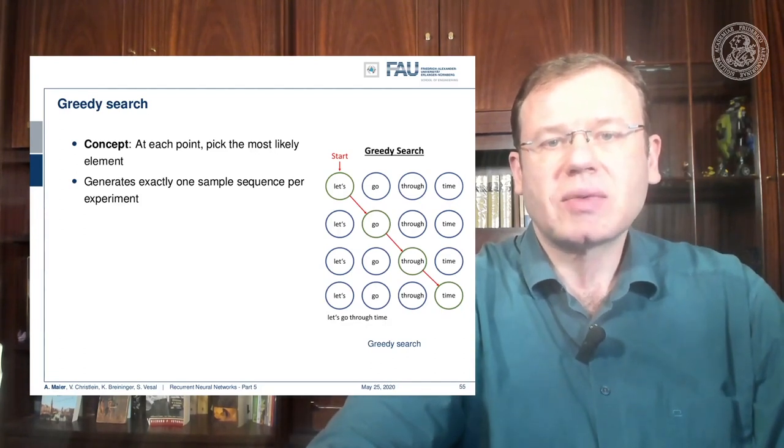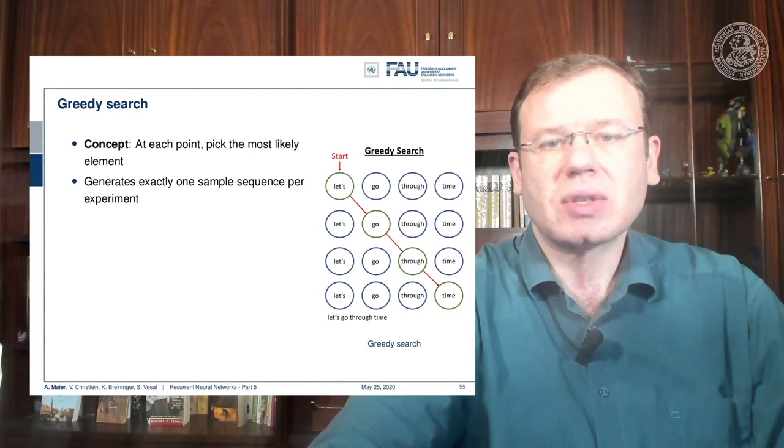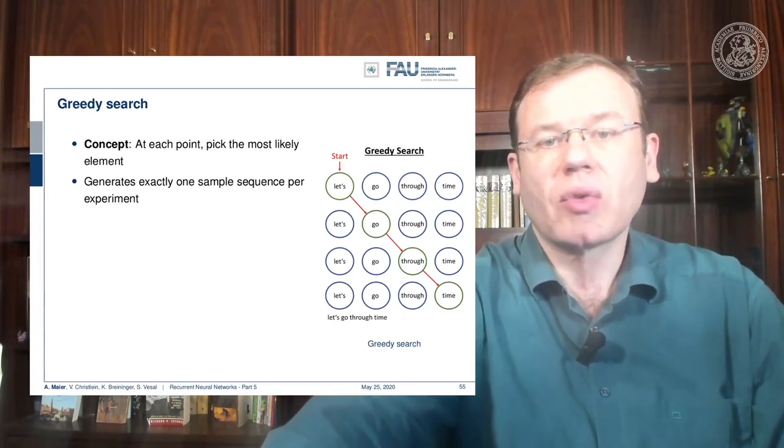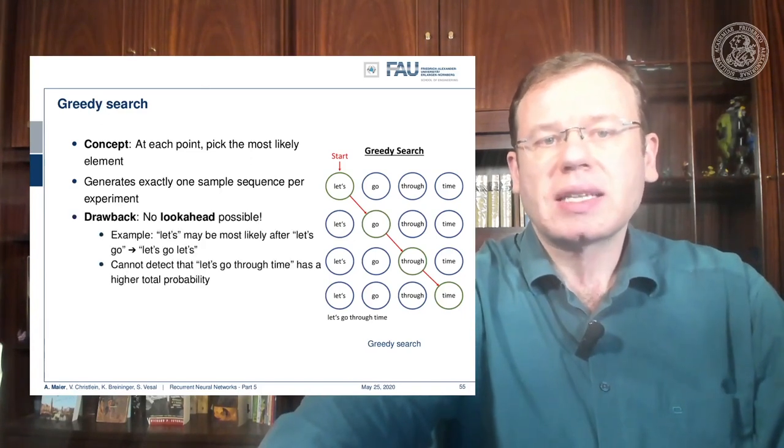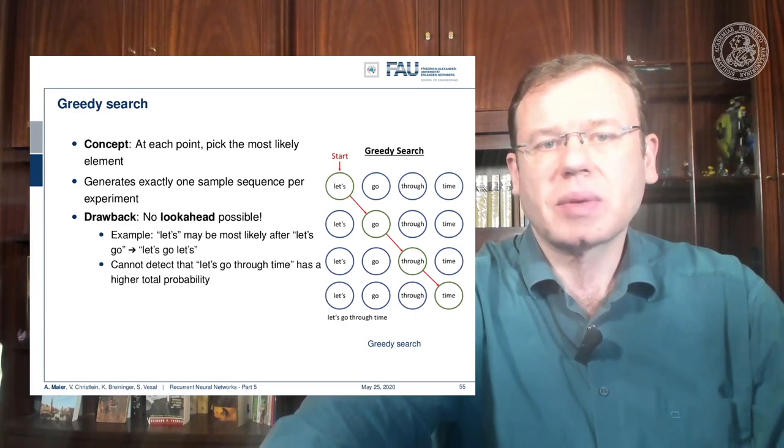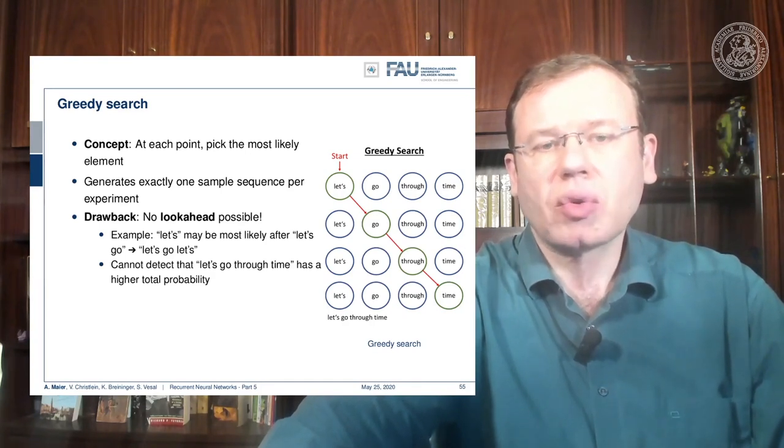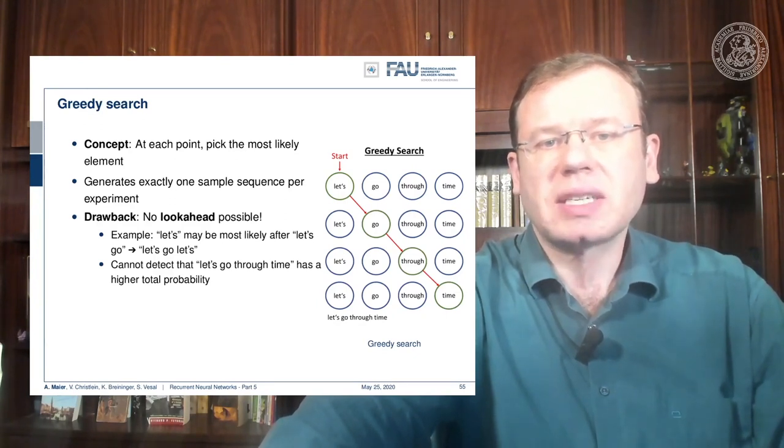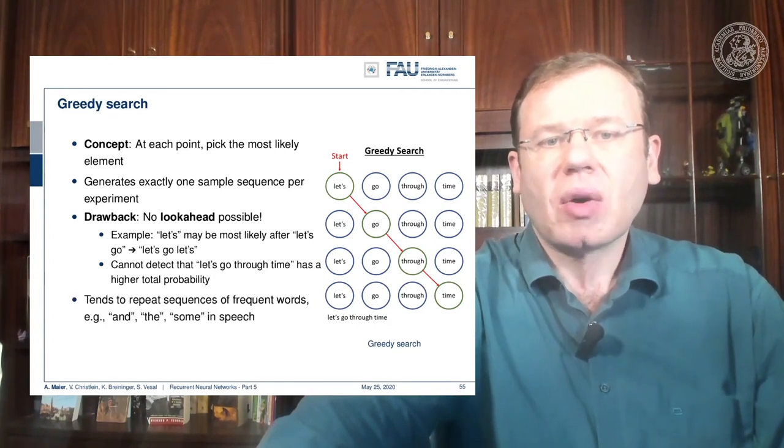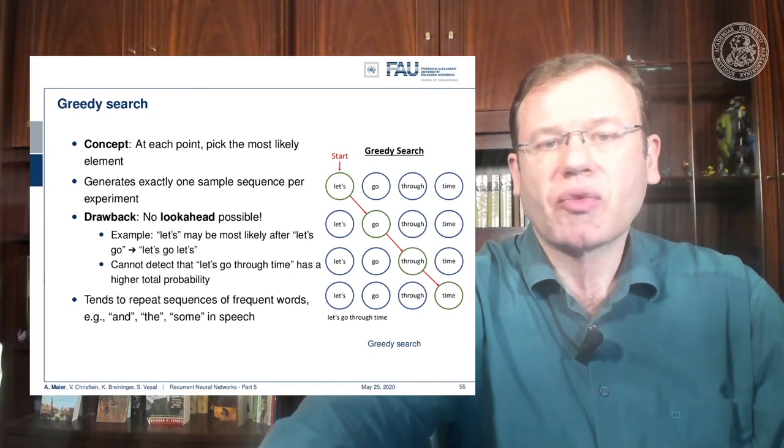The sentence that we are constructing here is 'let's go through time.' The drawback is of course there's no look ahead possible. So maybe the most likely after 'let's' is 'go,' so you could be generating loops like 'let's go let's go' and so on. It tends to repeat sequences of frequent words and so on.